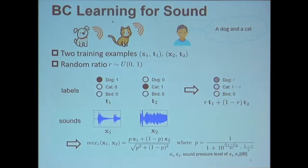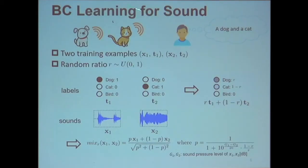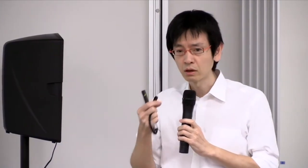One important application of between-class learning is sound recognition. If a dog barks and a cat meows simultaneously, we can recognize that there is both a cat and a dog from only the environmental sound. This means it is very reasonable to use a mixed example to train the network. However, to adapt to human perception of sounds, we need to consider the sound pressure level when mixing two environmental sounds.